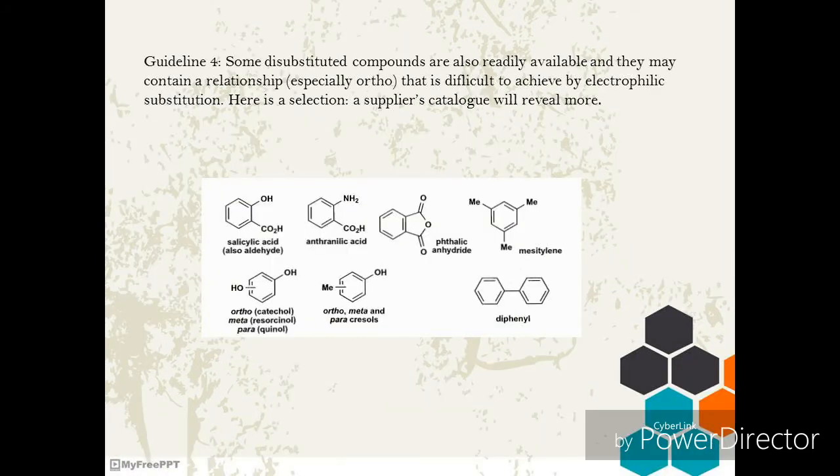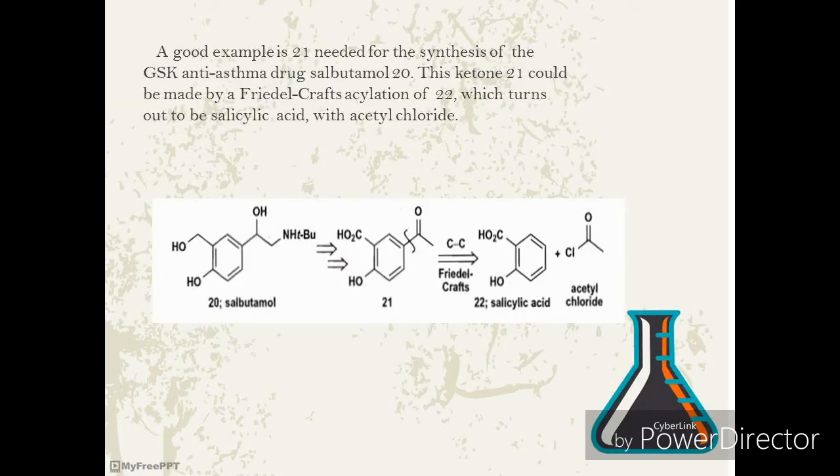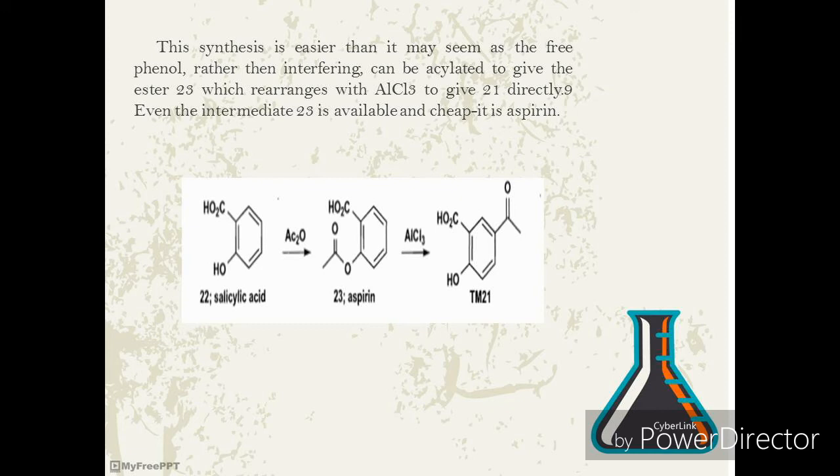Guideline 4: some disubstituted compounds are also readily available and they may contain a relationship, especially ortho, that is difficult to achieve by electrophilic substitution. Here is a selection, as a supplier's catalogue will reveal. A good example is 21 needed for the synthesis of the GSK anti-asthma drug salbutamol 20. This ketone 21 could be made by a Friedel-Crafts acylation of 22, which turns out to be salicylic acid, with acetyl chloride. This synthesis is easier than it may seem as the free phenol, rather than interfering, can be acylated to give the ester 23 which rearranges with AlCl3 to give 21 directly. Even the intermediate 23 is available and cheap - it is aspirin.